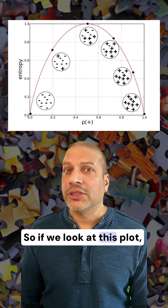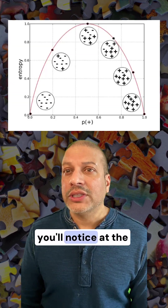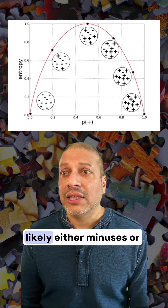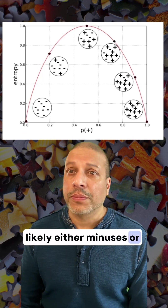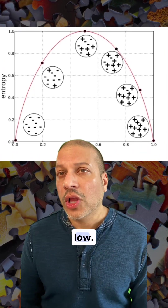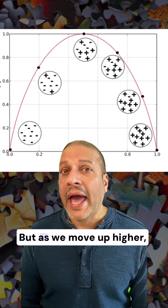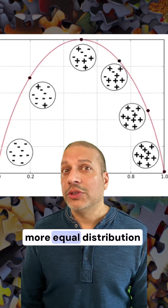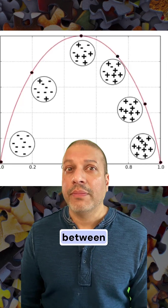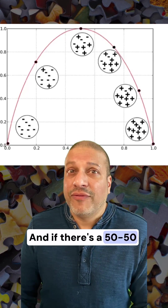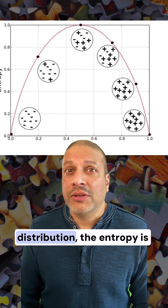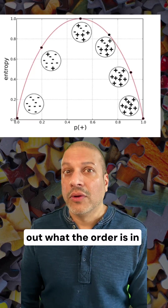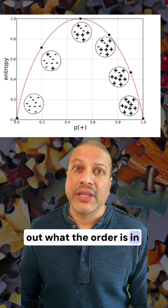If we look at this plot, you'll notice at the bottoms of the plot, where we know that it's likely either minuses or plus, the entropy is really low. But as we move up higher, we see there's a more equal distribution between minus and plus. And if there's a 50-50 distribution, the entropy is very high because it's hard to figure out what the order is in that system.